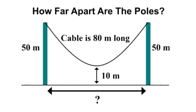This problem was used as an Amazon interview question. A cable of 80 meters is hanging from the top of two poles that are both 50 meters from the ground. What is the distance between the two poles to one decimal place, if the center of the cable is 10 meters above the ground? After I show you how to solve this problem, I will solve the variant of it in which the cable is 20 meters above the ground, because it's mathematically interesting.